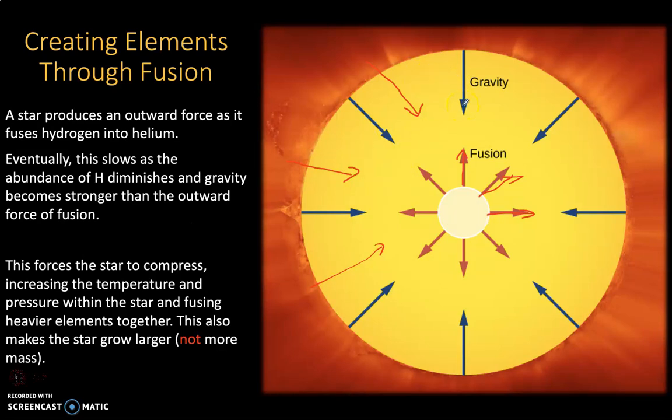Once that new nuclear reaction takes place, then the outward pressure of fusion is restored. And so the star can once again hold itself up as it fuses heavier elements. This forced the star to compress, increasing the temperature and pressure within the star and fusing heavier elements together. This also makes the star grow larger. Not more massive, but larger in size as it fuses heavier elements together.